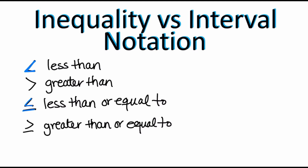Let's say that we're going to look at x is greater than 2. This is written in inequality notation. If I wanted to graph this I would start at the number 2, place an open circle at 2, and shade everything to the right, because we want all the numbers that are greater than 2.